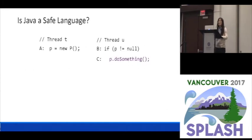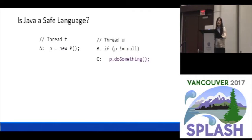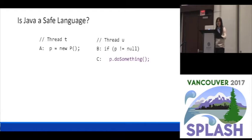Is Java a safe language? We all think Java is a safe language, but here is an example. We have two threads, thread T and thread U. Thread T is creating a new object P, and thread U first checks to see if the pointer to the object is not null. If it is not null, it means the initialization of P has finished, so then you can call some methods of the variable P.